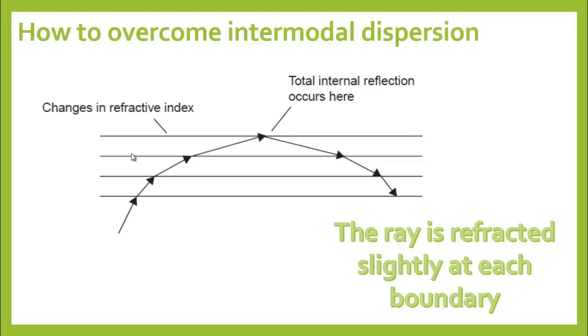It's important to appreciate that in a real graded index fiber, changing the refractive index is smooth and continuous. It's not really arranged in layers as is suggested by the diagram. The result is that the light suffers an infinite number of small refractions and has the effect of making the light bend in the smooth curves we saw in the previous figure rather than discrete steps at each layer.